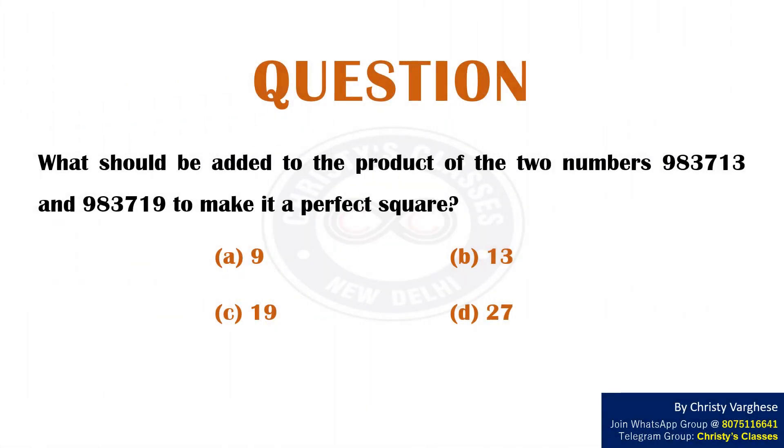In today's video, let us discuss a question on perfect squares. What should be added to the product of the two numbers 983713 and 983719 to make it a perfect square? Options: A) 9, B) 13, C) 19, and D) 27.